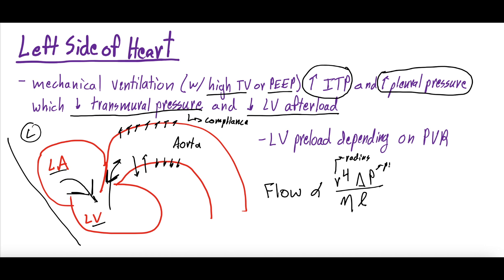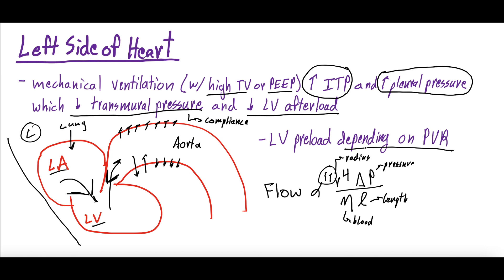With decreased transmural pressure, the aorta can be more compliant and expand. Since it can be more compliant, you actually decrease LV afterload. Blood flow is proportional to the radius to the fourth power — from the Poiseuille relationship — so if compliance is higher and radius increases, flow increases substantially. When you get a mechanically ventilated breath, you decrease transmural pressure, allow the aorta to be more compliant, and decrease left ventricular afterload. LV preload depends on pulmonary vascular resistance — if PVR is high, less blood flows from the lungs to the left atrium, reducing LV preload.